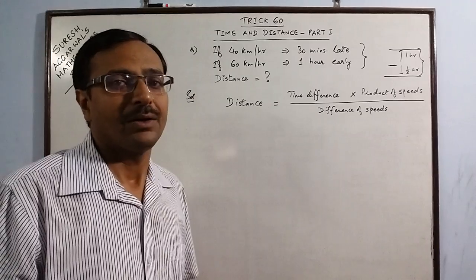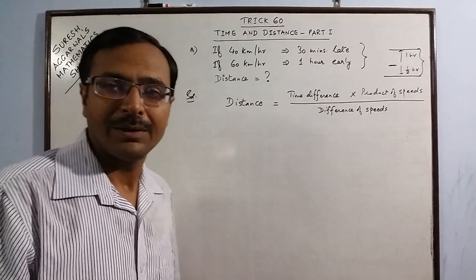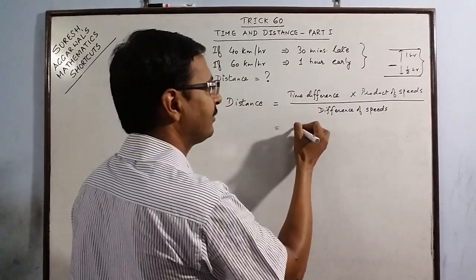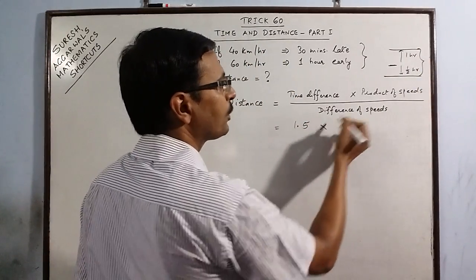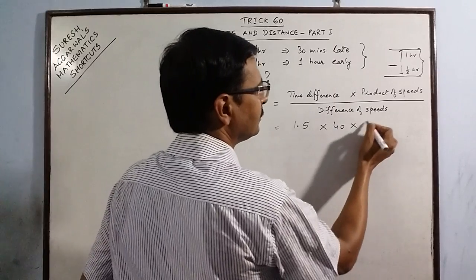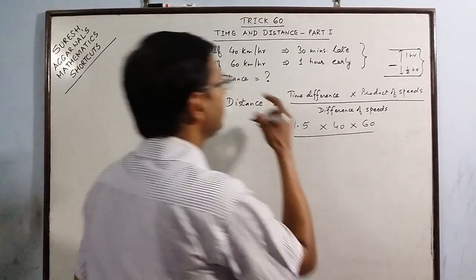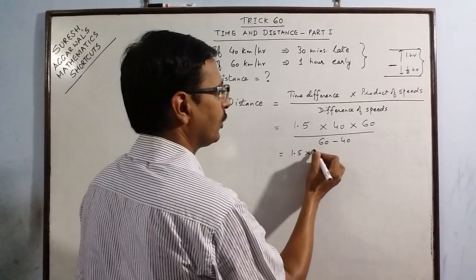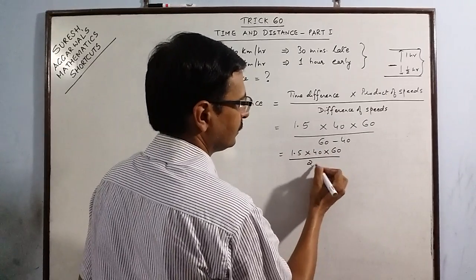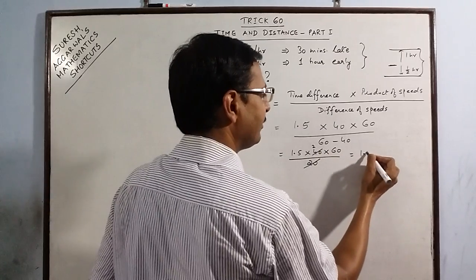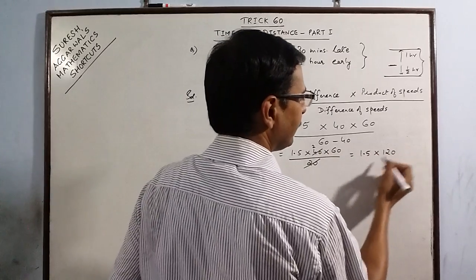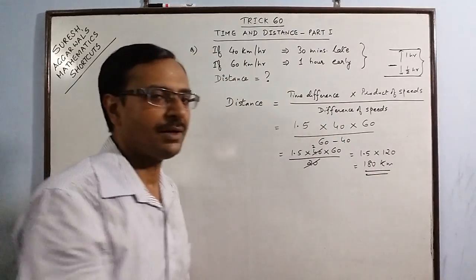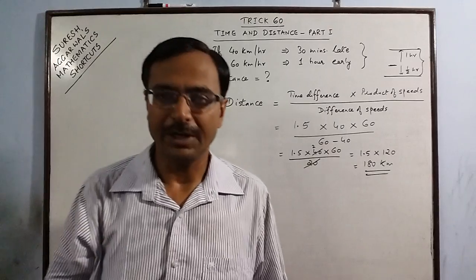You will be amazed to see the result coming up in the next 5 seconds. The time difference here is 1 and half hours, so 1.5. Product of speeds: 40 into 60. Difference of speeds: 60 minus 40. 1.5 into 40 into 60 upon 20, cancel 20. So 1.5 into 120, 120 plus 60, that is 180 kilometers is the distance between the origin and the terminating point.